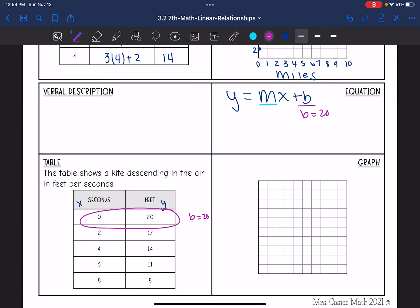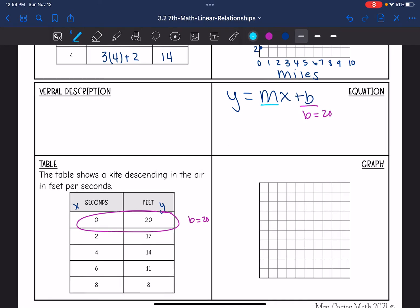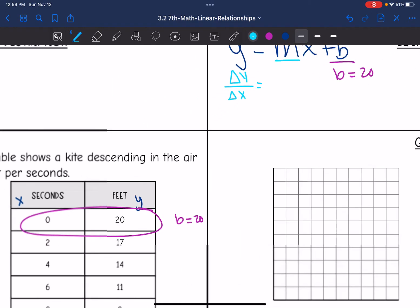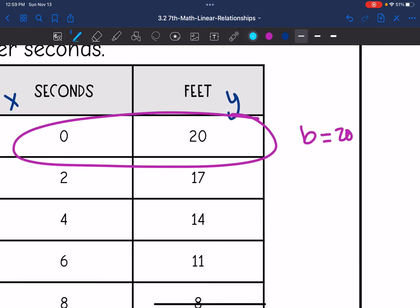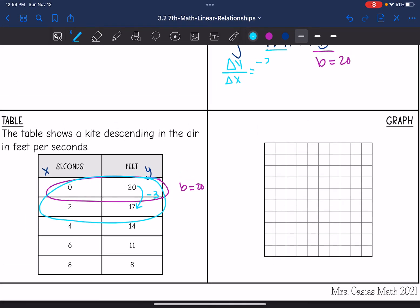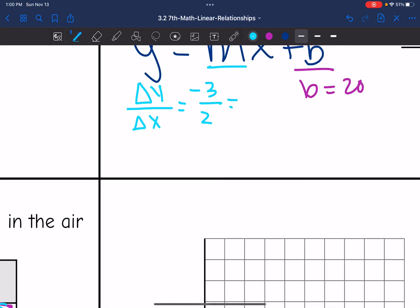And now I just need my rate of change. Remember, the rate of change is the change in y over the change in x. So I'm going to use two ordered pairs to find the change in y divided by the change in x. I'll use these two. The change in y would be 20 to 17, which is negative 3. And then the change in x from 0 to 2 is plus 2. And negative 3 over 2, since we're talking about feet and seconds, I'm going to change that to a decimal, which is negative 1.5.